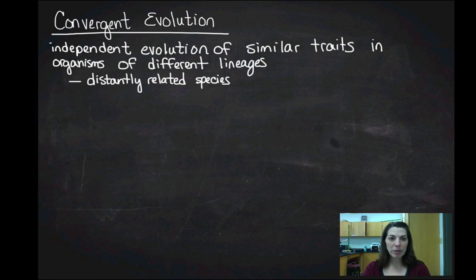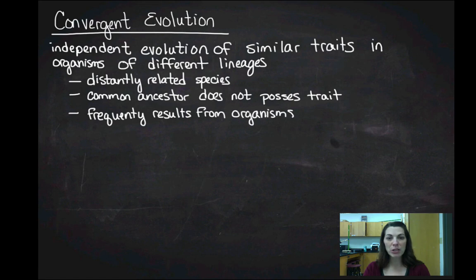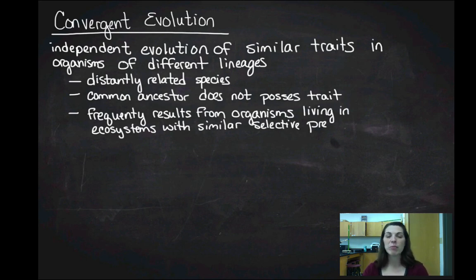So let's look at an example of convergent evolution. The main thing you need to know is that the common ancestor for these two organisms does not possess the trait. And these are frequently results from organisms living in ecosystems that have very similar selective pressures.